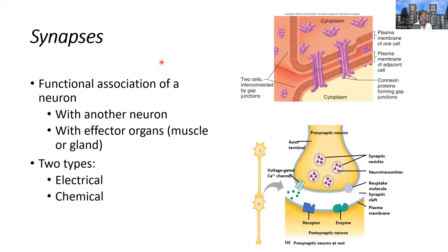A synapse is a functional association with another neuron or another type of cell — a muscle cell, cardiac muscle cell, skeletal muscle cell, smooth muscle cell, or even a glandular epithelial cell. Here's our presynaptic neuron and here's the postsynaptic neuron. The most common type of synapse is the axon terminal synapsing onto the dendrites — the axodendritic is the most common form.